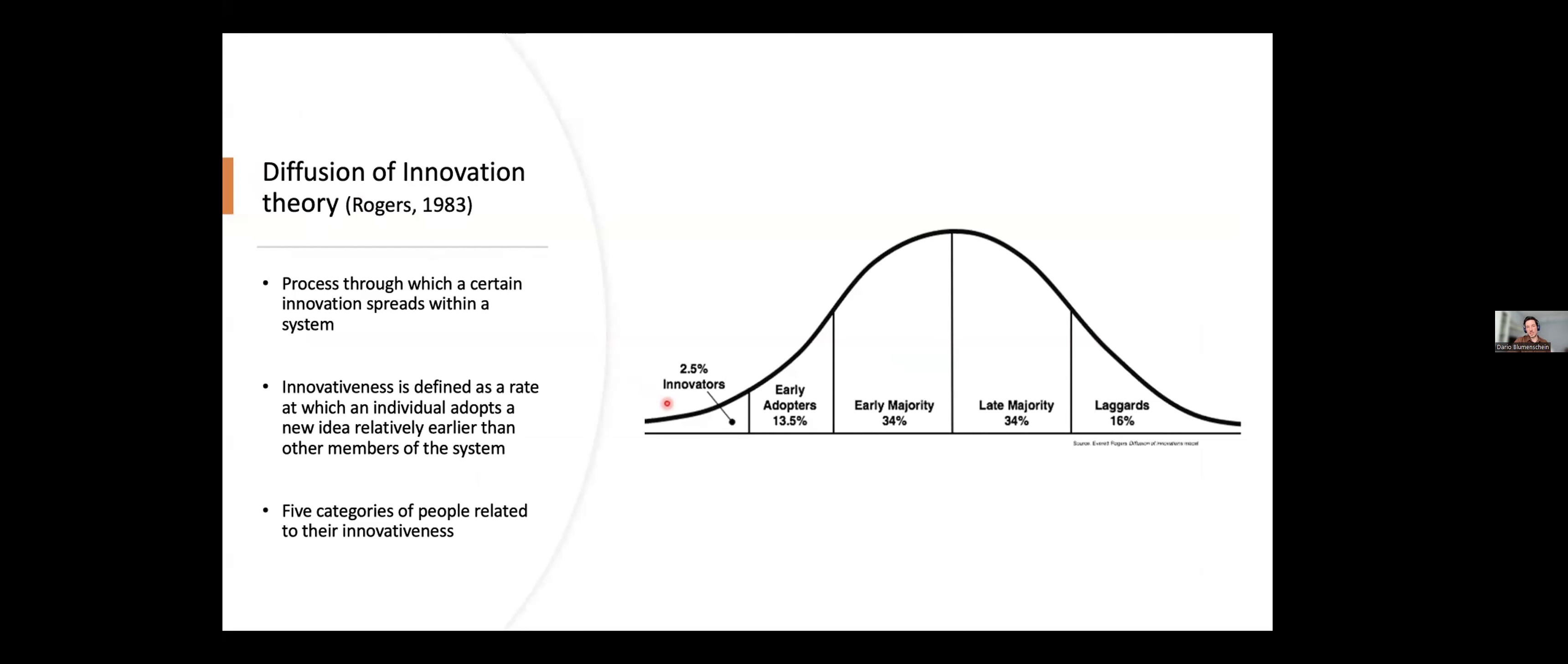Another thing that we also asked them is to finish this innovativeness survey. So you don't have to look at that. It's just to show you how it looks like. But this is based on this diffusion of innovation theory. So this is one of the change theories that exists. We like this one because we think it fits really nice with the social network narrative. But it basically discusses this process through which a certain innovation or an idea spreads within a system. And they define innovativeness as a rate at which an individual, so any teaching staff, adopts a new idea relatively earlier than other members of that system.